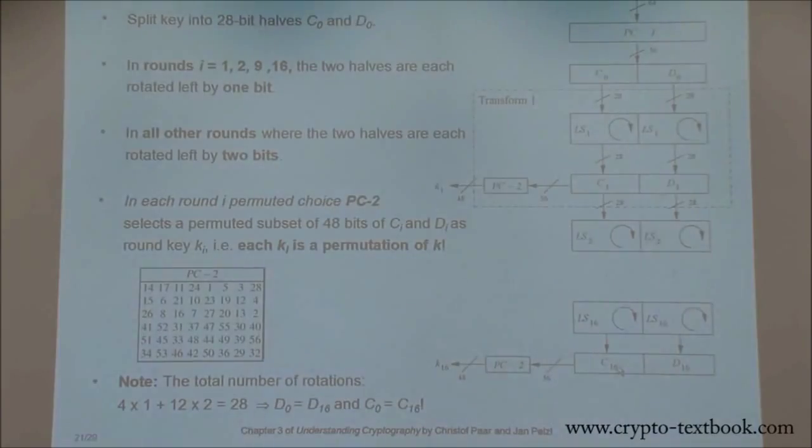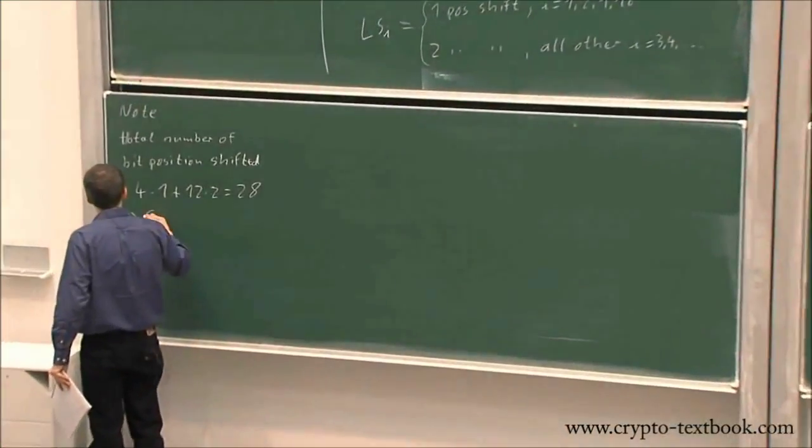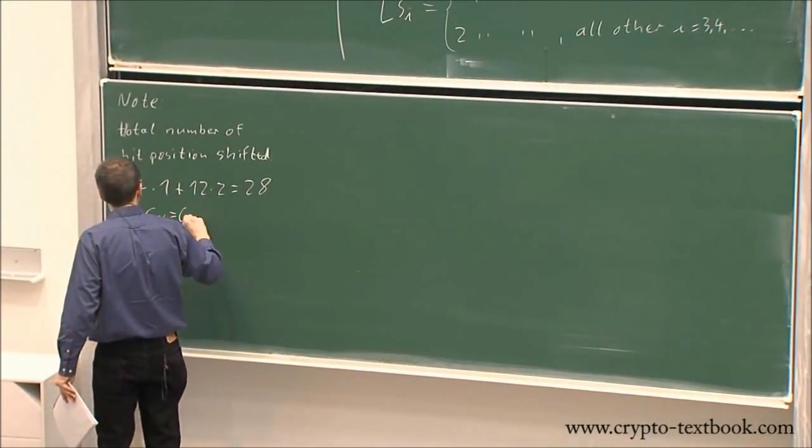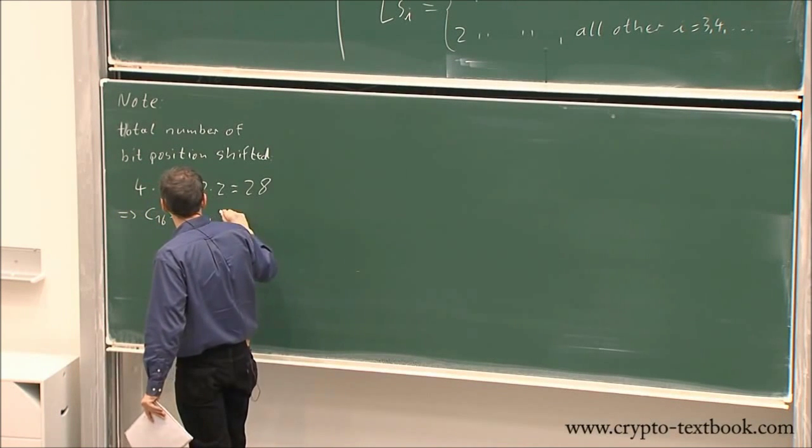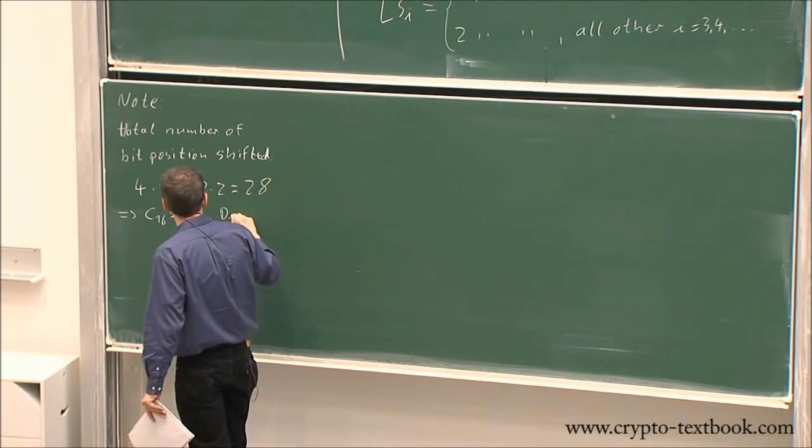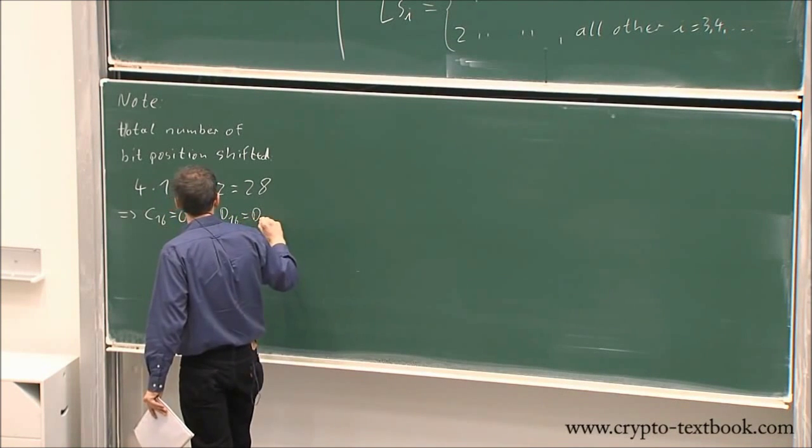Yeah, you got the idea. C16 is exactly the same value as C0. It's just, you know, you rotate. C16 equals C0, and D16 equals D0.